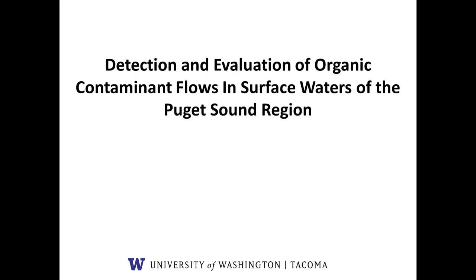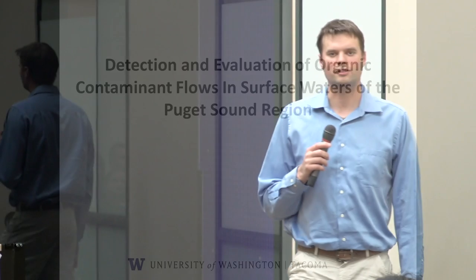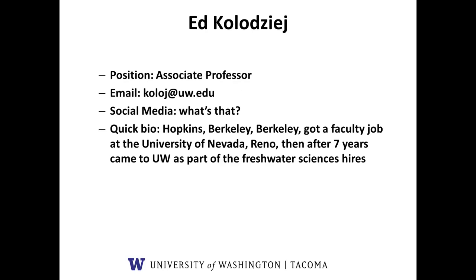My name is Ed Kolodziej. I'm here in the science and mathematics group, and today I'll talk about organic contaminants in surface waters of the Puget Sound region. Really what I do is look at water quality here in Puget Sound, especially focusing on compounds with adverse effects for aquatic ecosystems. I went to Hopkins and Berkeley, had a faculty job at University of Nevada, Reno for seven years, and then I came to UW in 2014 as part of the Freshwater Sciences hire, where I work across both campuses.